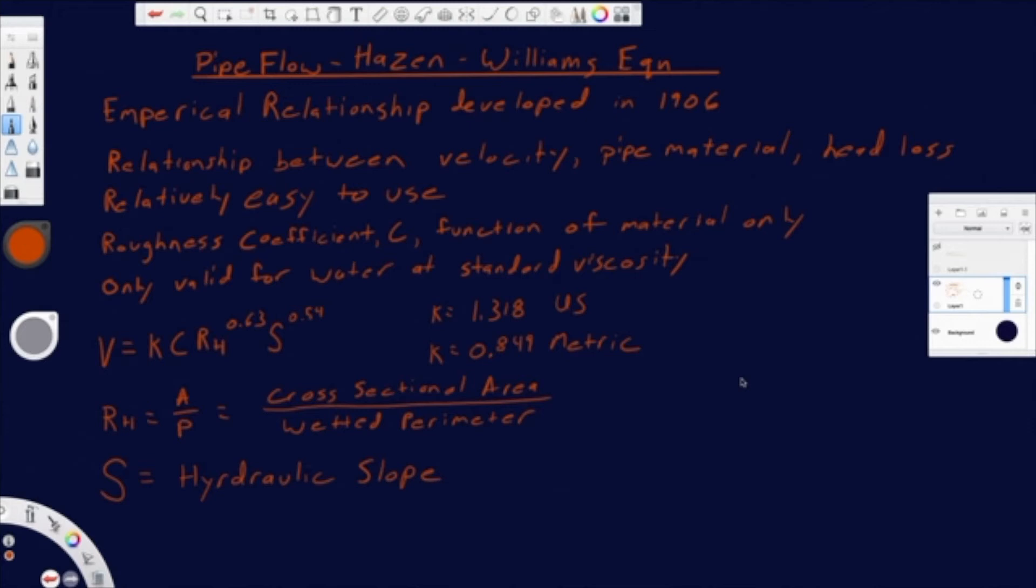But the limitation that comes from that is that it's only valid for water. It's only valid at standard viscosity. One of those might be an issue. The other probably isn't. So if you're talking about, obviously, if you're not talking about water, Hazen-Williams is out of the question.